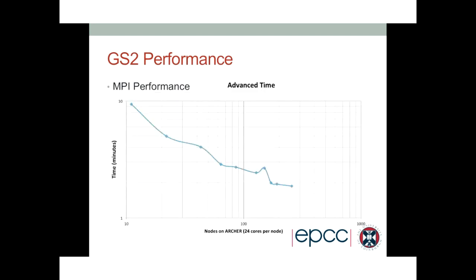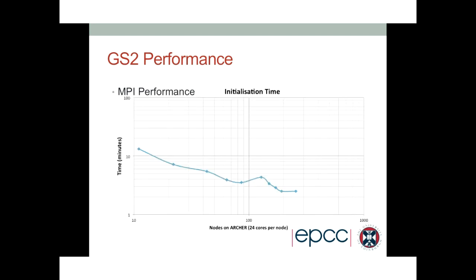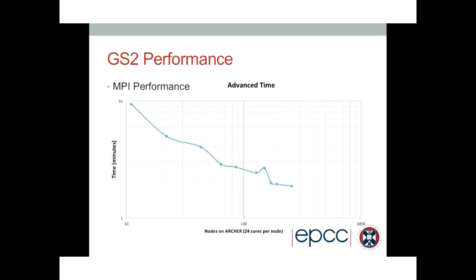We can break this down and compare initialization time with advance time. The advance time scales a bit better — during the actual simulation it scales quite well at the beginning but still tails off. The initialization is not scaling particularly well, though we could ignore it since it's generally only run once. The starting point for this work is that we want to make the code scale further — the scaling runs out and we'd like to push that graph further.